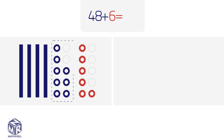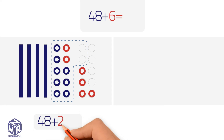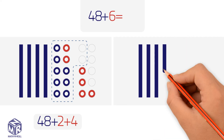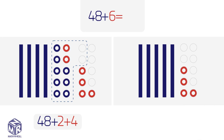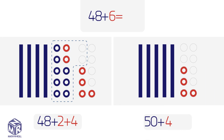What can we add to 8 to make a 10? 2. We give 2 to 8 to make a 10. We break apart 6 into 2 and 4. Now we have 48 plus 2 plus 4. We have five 10s and four 1s, or 50 plus 4, which equals 54. So 48 plus 6 equals 54.